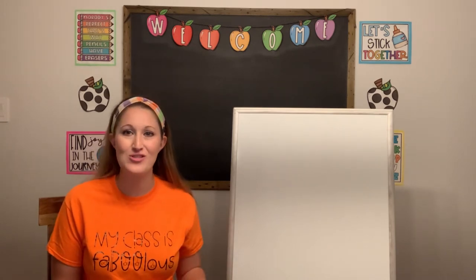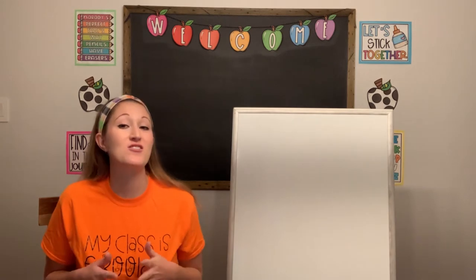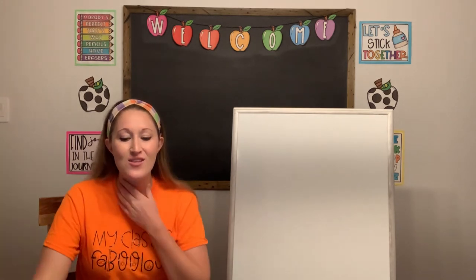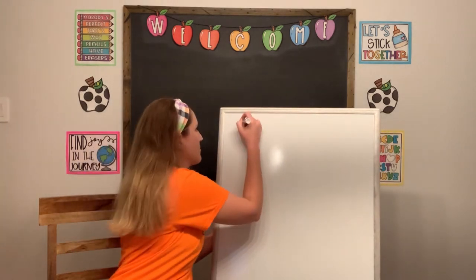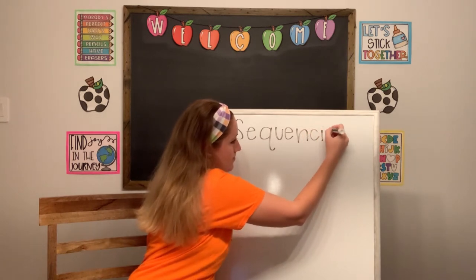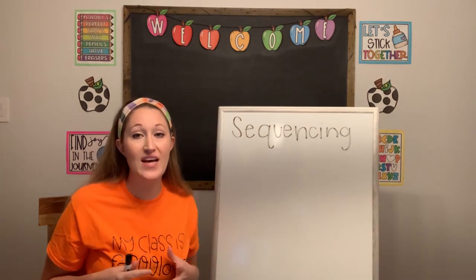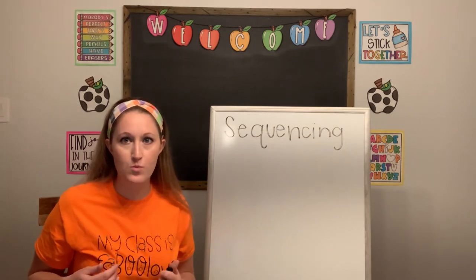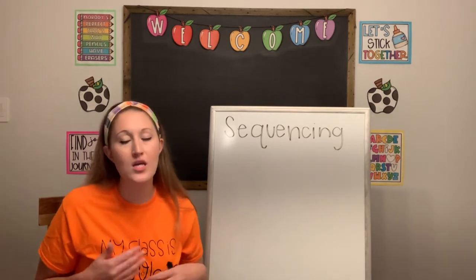This week we are exploring nonfiction text structures through the Who Would Win series by Jerry Palotta. Today is Thursday and it's my last day with you this week, which means we have one more nonfiction text structure to go over. Today we're going to be going over sequencing. Sequencing is when we put a group of events in order. We can use graphic organizers to help us — telling us first, then, next, then, and last. We can use flowchart maps to help us.